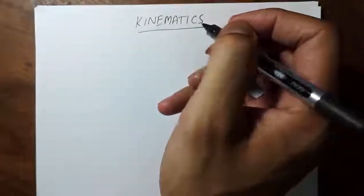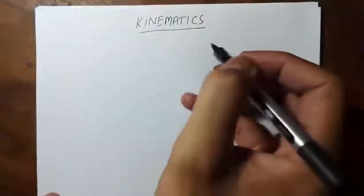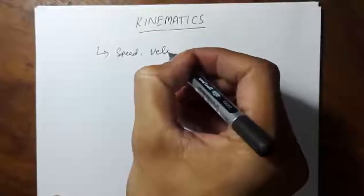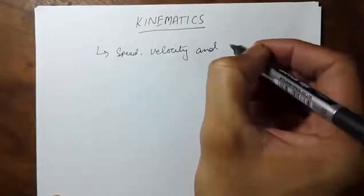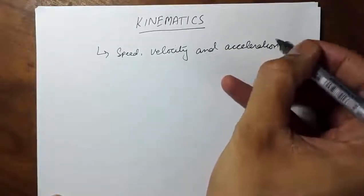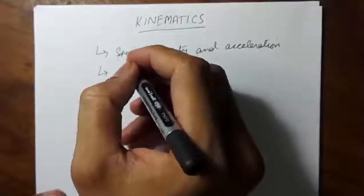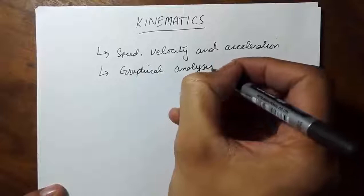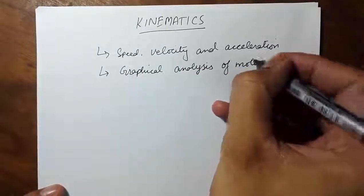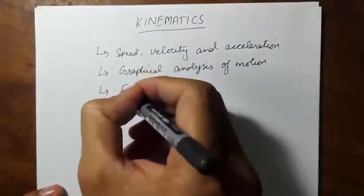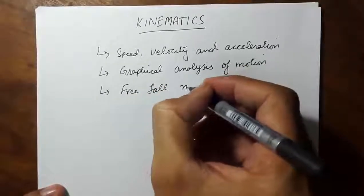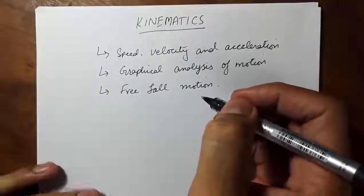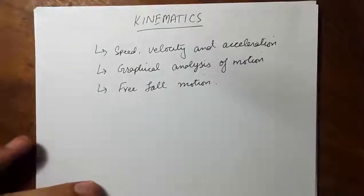This is our second chapter of O-Level Physics and the content that we will cover in Kinematics will be related to speed, velocity and acceleration. Moreover, we will study the graphical analysis of motion as well as the freefall motion. So, let's begin by defining speed and velocity and also we will see the difference between speed and velocity.